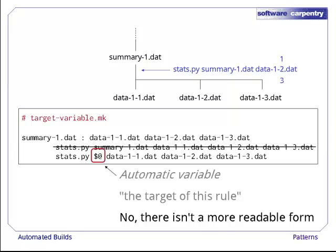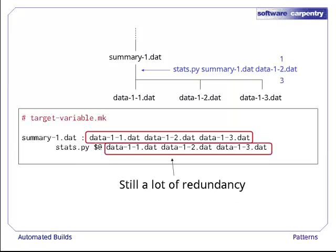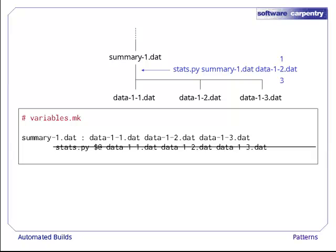Using $@ instead of repeating the target's name shortens our rule somewhat, but writing the many prerequisite file names twice is still redundant. Let's fix that by replacing our shortened rule command with this. $^ is another automatic variable. It means all the prerequisites of this rule. In this case, it's the three raw data files. So when make expands the variables in stats.py, $@, $^, we get back our original command.